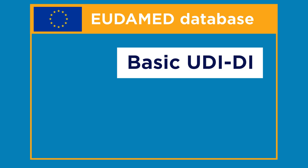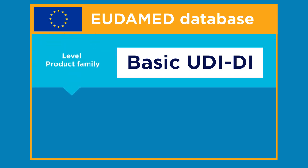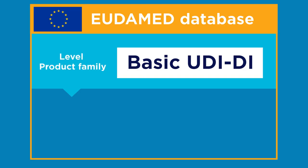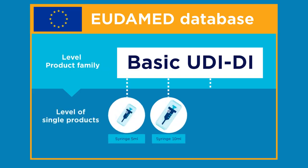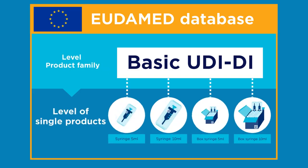The basic UDI-DI is the highest level of identification of the product hierarchy within the EUDAMED database and identifies an entire product family or a product model. In a product family, individual products are combined in different variants and with common characteristics.